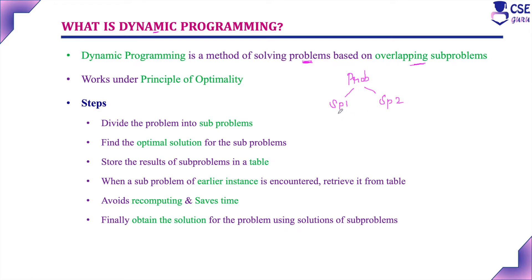Again, if it is possible, subproblem 1 will be divided into further subproblems. Similarly for subproblem 2, if it is possible, divide it into subproblems. And again, if this subproblem is possible to divide, divide it further. Likewise, the procedure continues however it is possible to divide. Then find the solution for these subproblems.